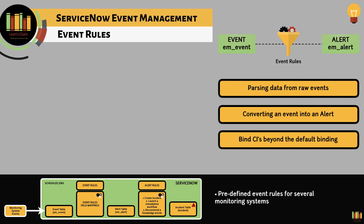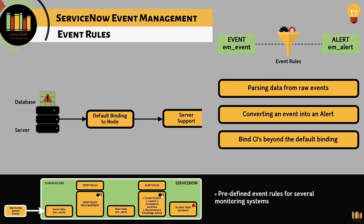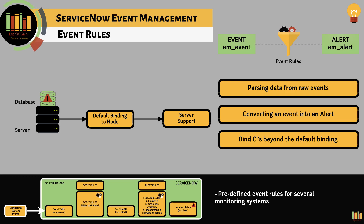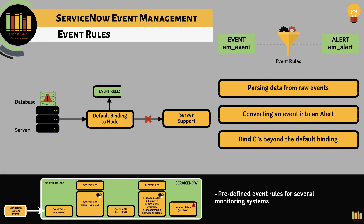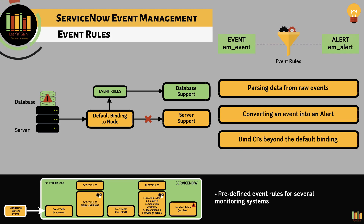Binding refers to the configuration item that you see on an incident record. A simple example where binding can help: assume a scenario where there is a database event but the node or configuration item mentioned is a server instead of the actual database instance, as the database runs on the host. An incident record would be created and assigned to platform support instead of database support. This is where binding can help — the default binding can be overridden to bind the corresponding CI that makes most sense for IT operations.